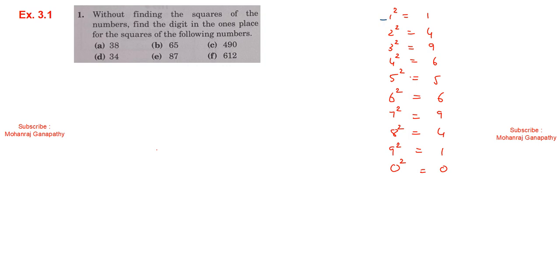The unit digit is the last digit. For example, 4 squared is 16, so the last digit is 6. If there is a number like 24, we only talk about the last digit. The last digit of 24 is 4, so the unit digit of 24 squared is 6.